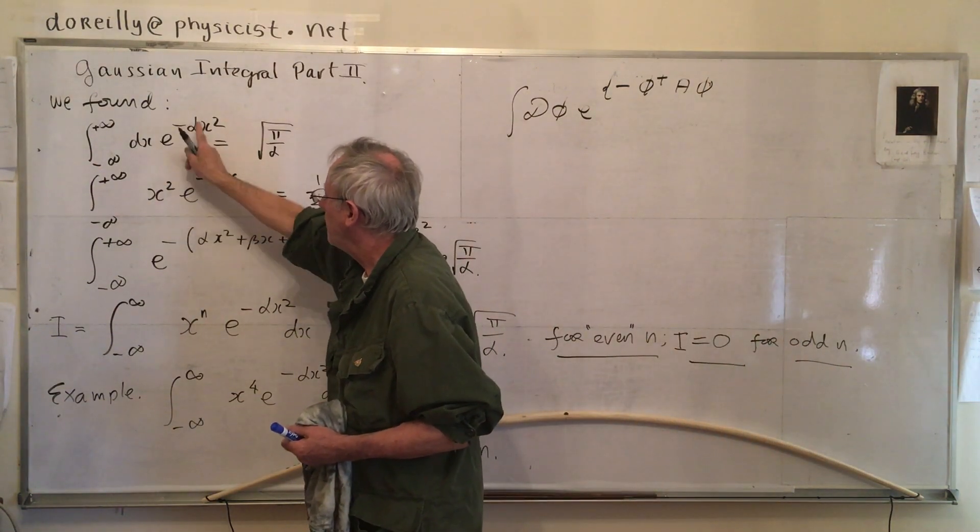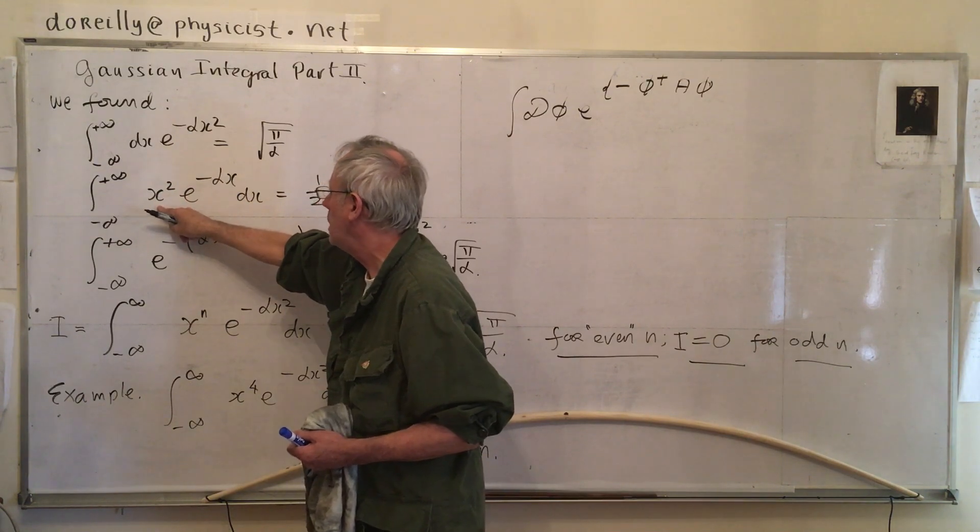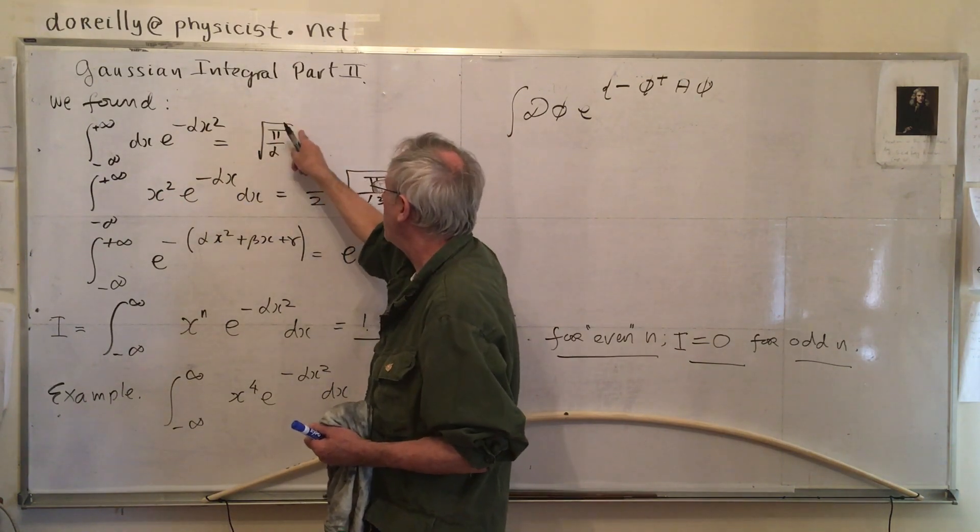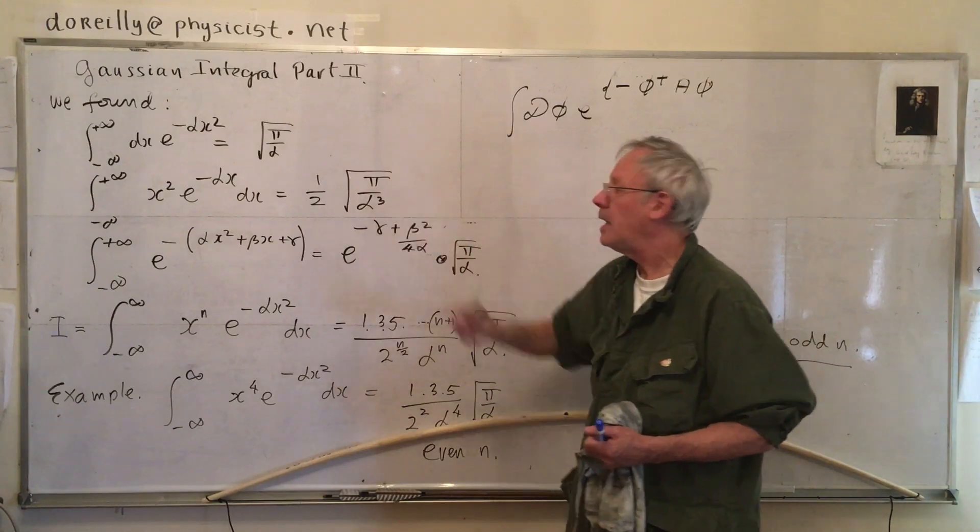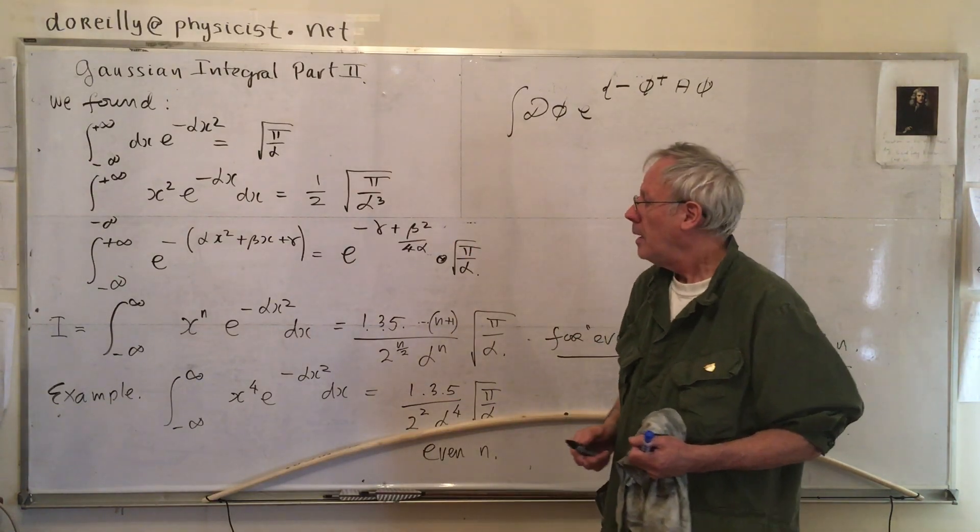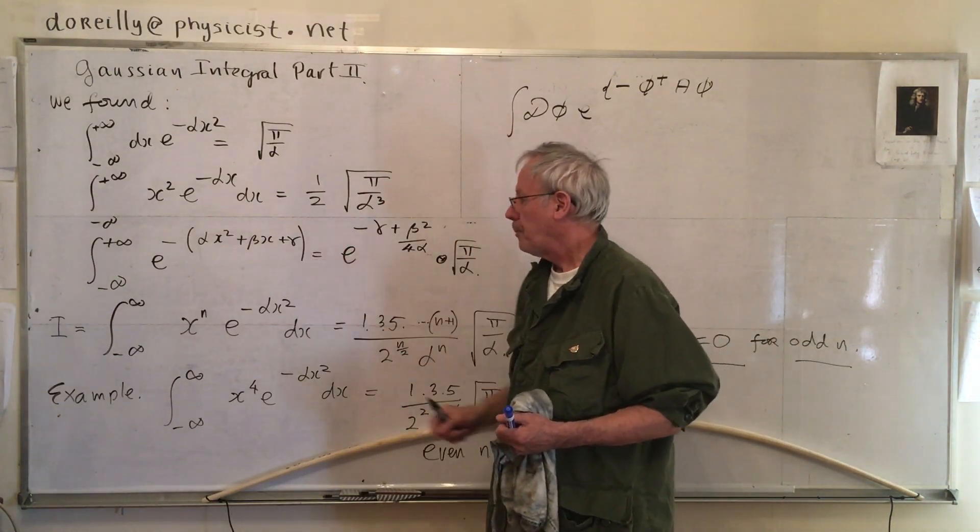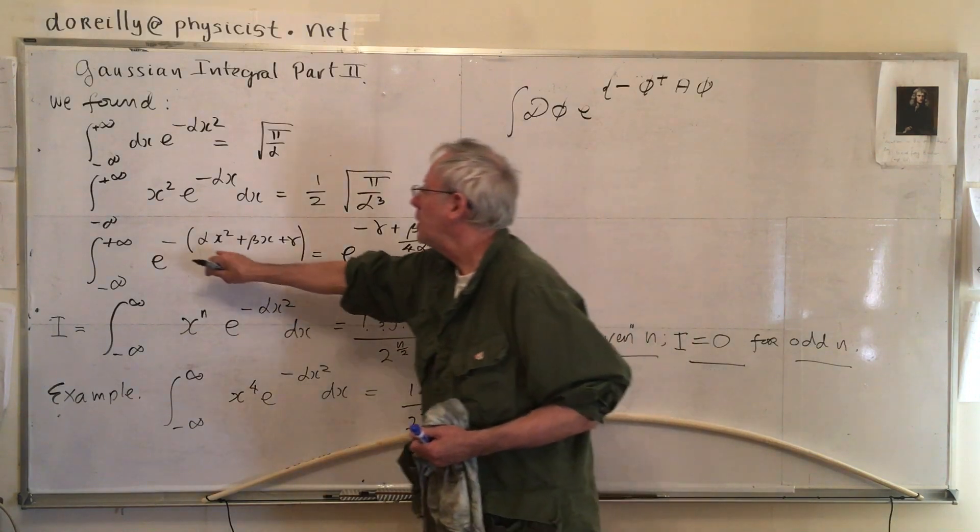d by d alpha, this thing, brings down an x squared, as you can see. Then you go d by d alpha of this, and it gives me a half pi over alpha root alpha cubed. You can go further. Well, we did this.